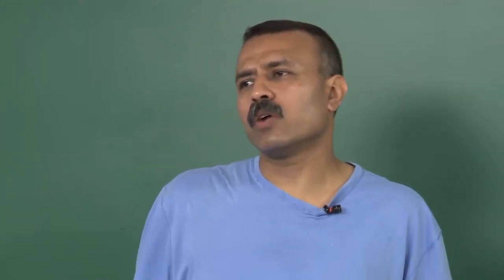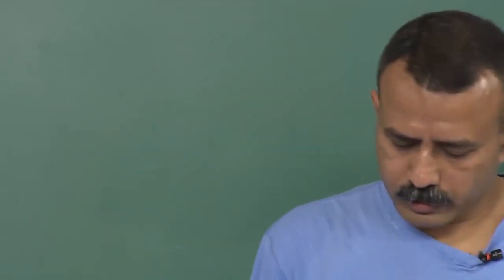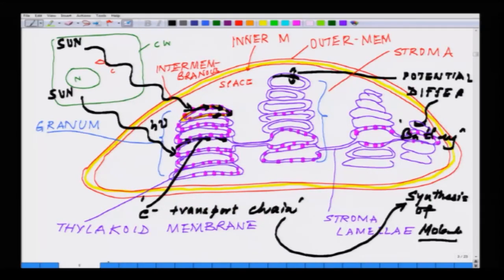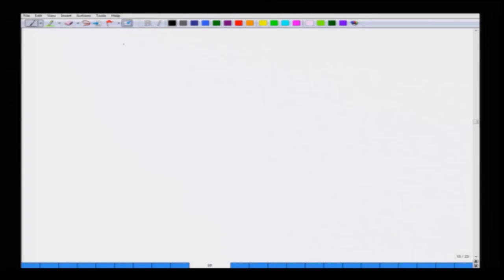With this brief historical perspective about how this simple reaction has evolved since 1700 — nearing 400 years — we will now talk about the fundamental molecules. Going back to the structure, this is where light is falling. The first molecule which gets activated by light is chlorophyll. Now we will talk about the structure of chlorophyll.